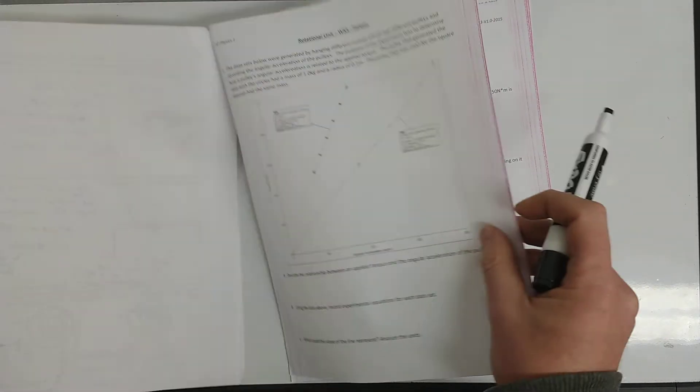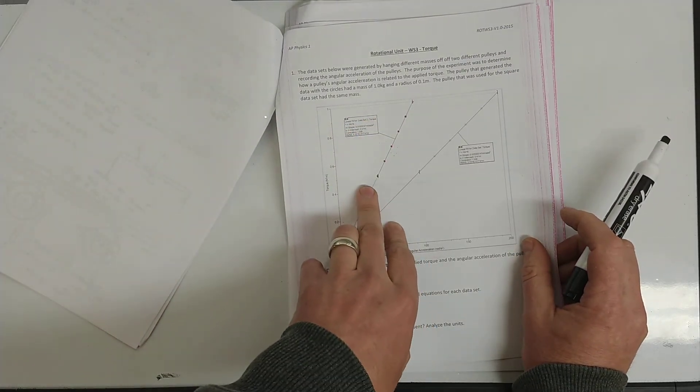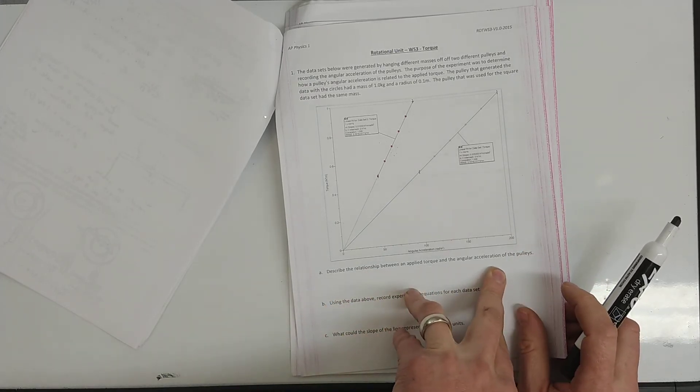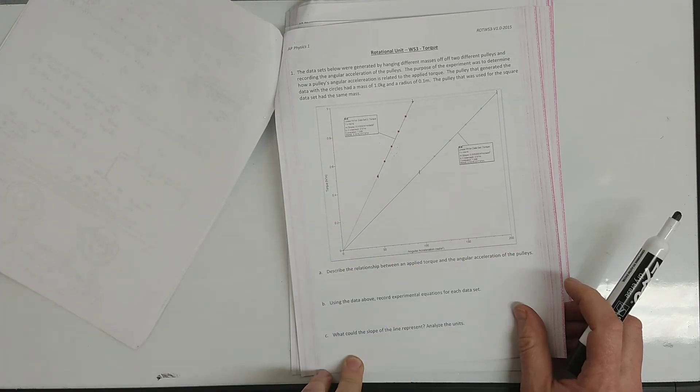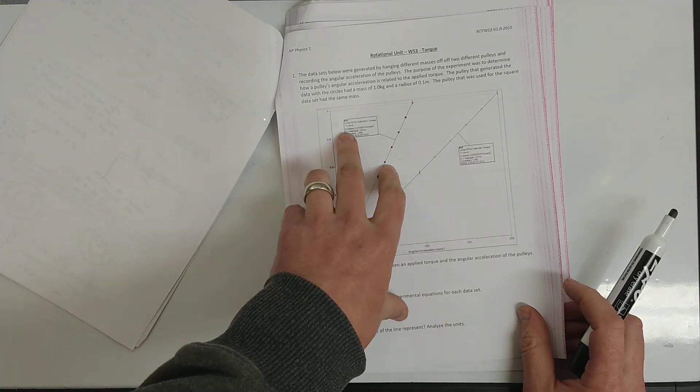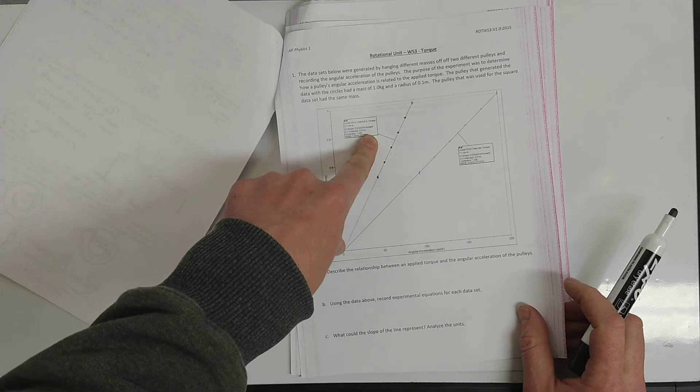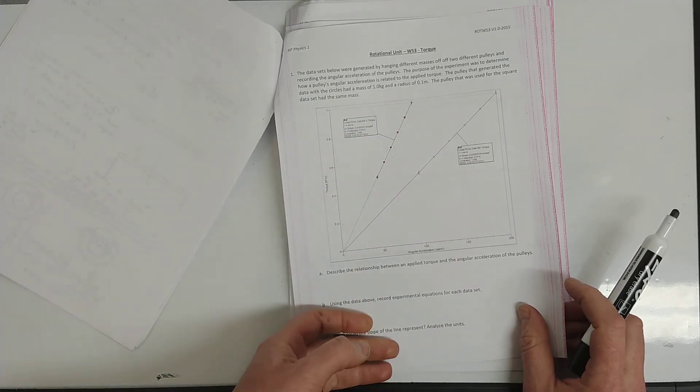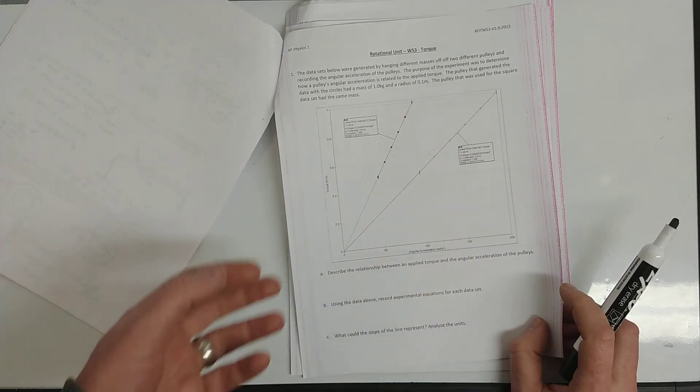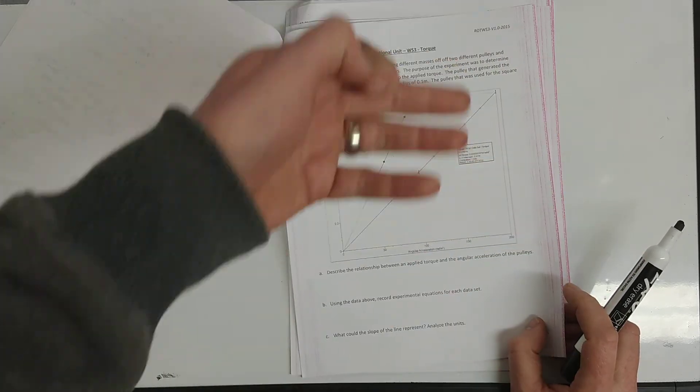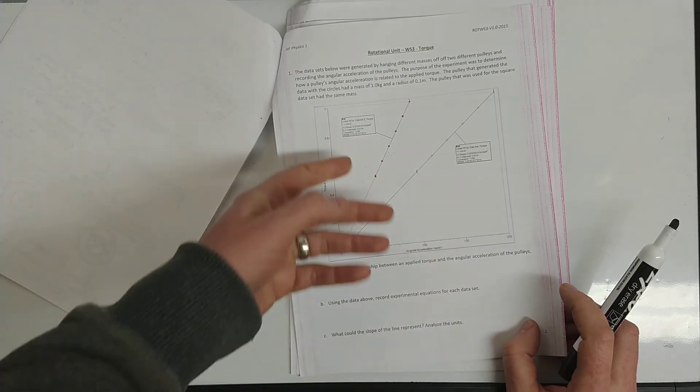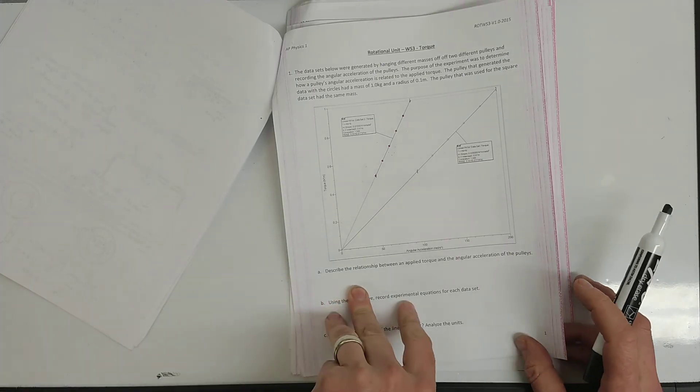I will say though, so for your homework, this business here, the slope of the line is the moment of inertia. Describe the relationship between applied torque and the angular acceleration of the pulleys. Well, the more torque, the more acceleration. Two different pulleys here, using data about report experimental equations for each data set, y equals mx plus b. So the slope of this one is bigger than the slope of this one. What could the slope of the line represent? Analyze the units. Well, the units are crazy, they end up being like kilograms times meters squared, so it's a mass times a distance squared. Well, it turns out it's the mass of the pulley times its radius squared, or half the mass, I should say, of the pulley times the radius squared.